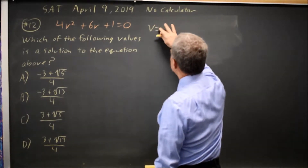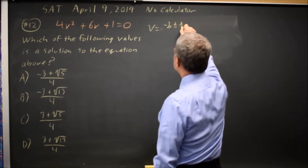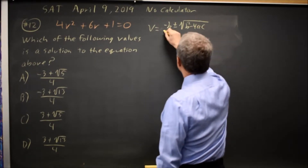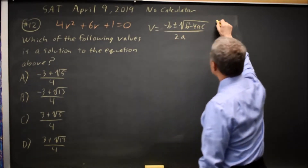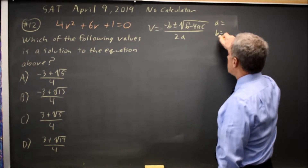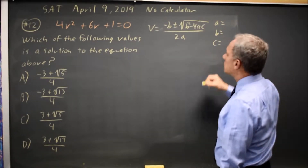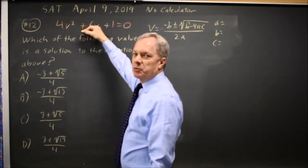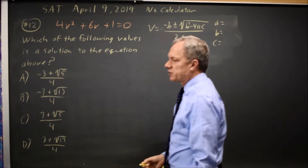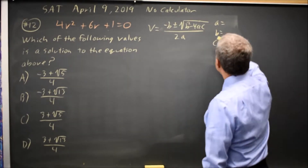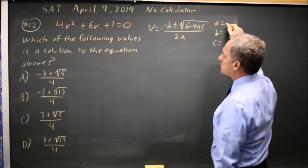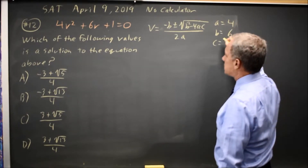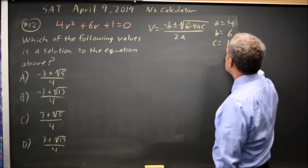v equals negative b plus or minus square root of b squared minus 4ac, all over 2a. I'm going to write a, b, and c off to the side so that I don't put them in the wrong place and especially so I don't drop a negative. So a is the v squared coefficient: 4, b is the v coefficient: 6, and c is the constant: 1.